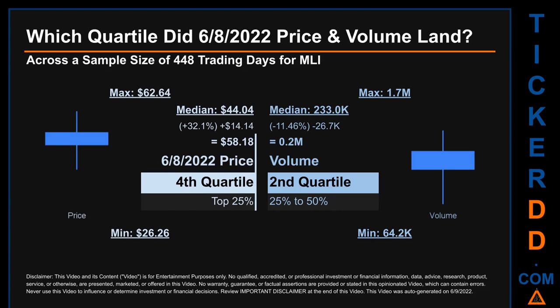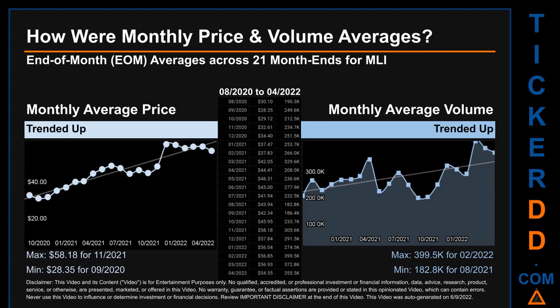The day's volume landed within the second quartile, that is within the 25 to 50 percent range of all sampled daily volume, which saw a max daily volume of 1.7 million and a minimum of 64.2 thousand. Quartiles tell us about the spread of a data set by breaking it into quarters, just like how the median breaks the set in half. Descriptively, MLI has a median price of $44.04; therefore, the June 8, 2022 price was higher from that middle marker by 32.1%. The day's volume of 0.2 million was less than the median by 11.46%.